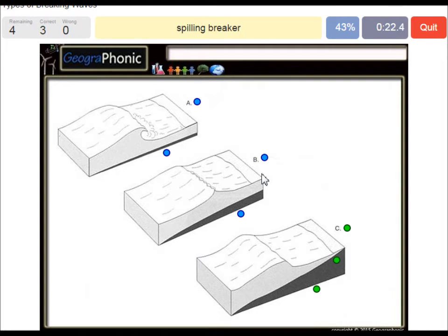Here we see a spilling breaker in picture B and a gentle beach slope in picture A. This is a gentle beach slope.